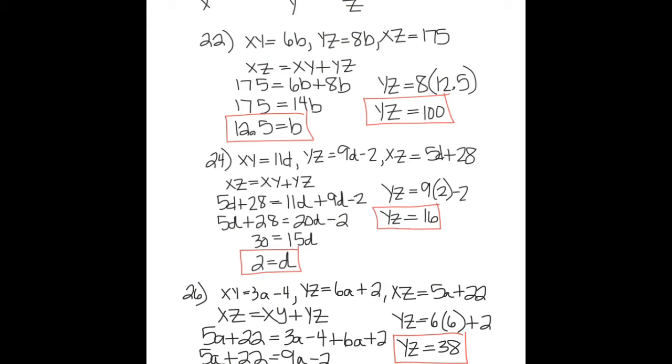Number 22: You're finding the value of the variable and YZ. So I set up that XZ equals XY plus YZ. I solve for b—b equals 12.5. Plug that back in to find YZ. YZ equals 100. Number 24: I solve for d—d equals 2. Plug that back in to find YZ. YZ equals 16. Number 26: I solve for a—a equals 6. Plug that back in and find that YZ equals 38.